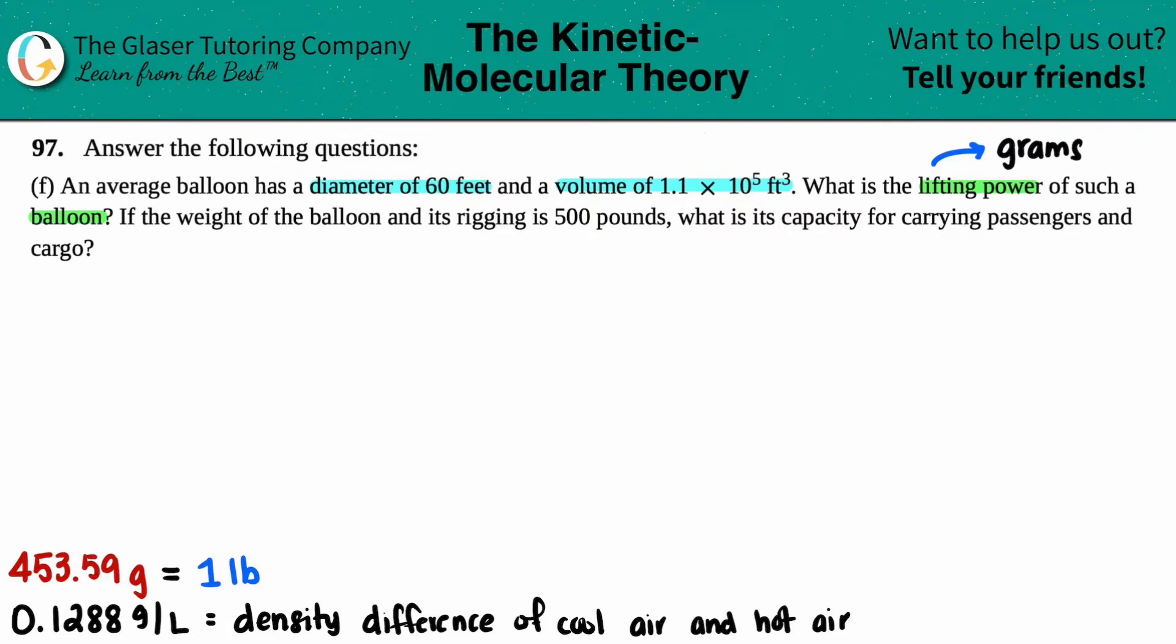From letter E, to get the lifting power, we need the density difference between cool air and hot air. We're going to use this number as a density or conversion. If the lifting power is in grams, and here's the gram value, we just need to get a liter value somehow.